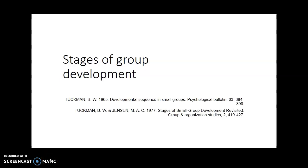One of the most common models of group formation and performance found in business management and organisational behaviour textbooks is Bruce Tuckman's model of small group development. Professor Tuckman's model was first published in an article titled 'Developmental Sequence in Small Groups' in the journal Psychological Bulletin in 1965. In this article, Tuckman proposed that small groups typically progress through four stages of development.